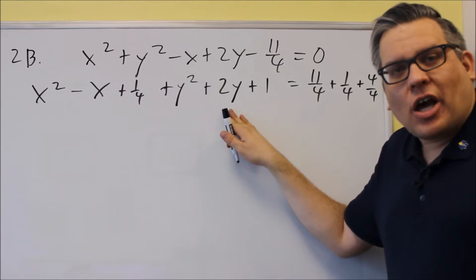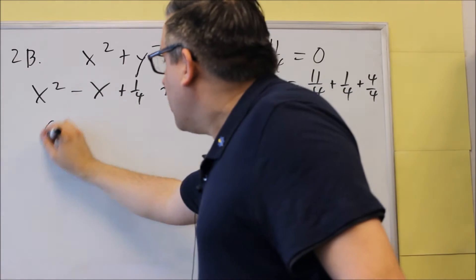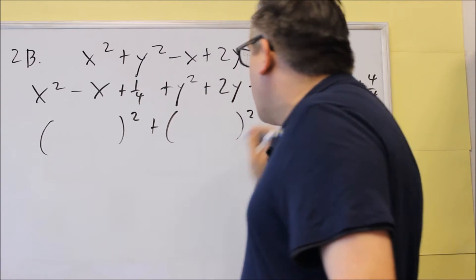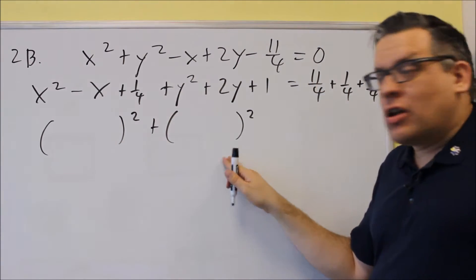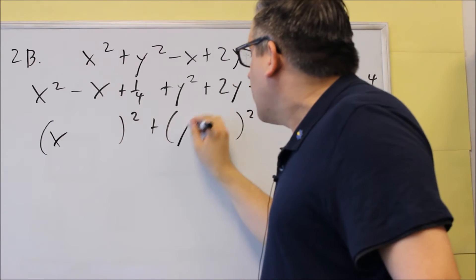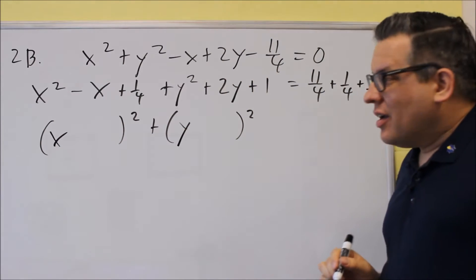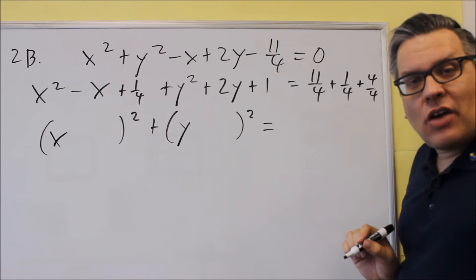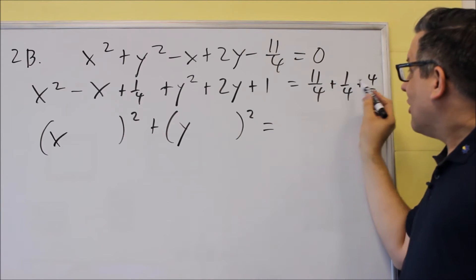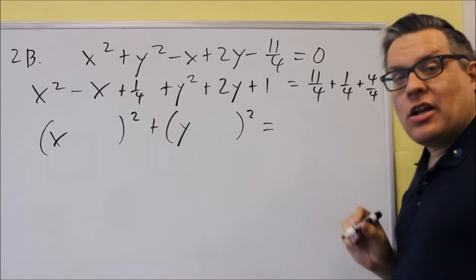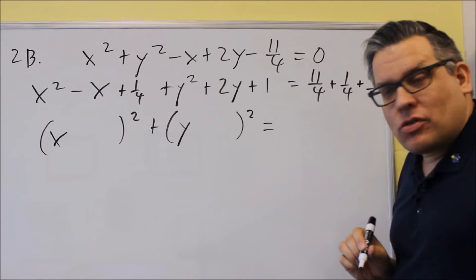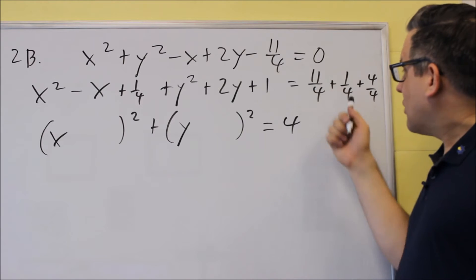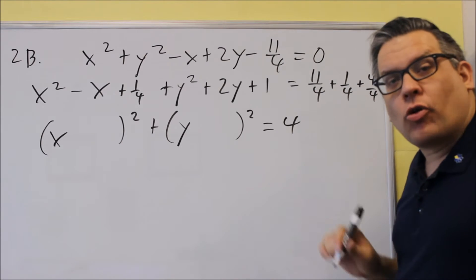Once you complete this step, you've created perfect squares. Those perfect squares factor into an x quantity squared and a y quantity squared. After the equal sign, adding everything together — we get 16 fourths, which simplifies to 4. So adding all of that together just gives you a whole number, 4.